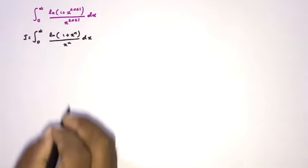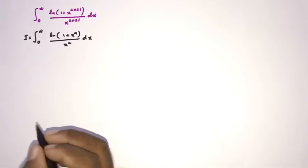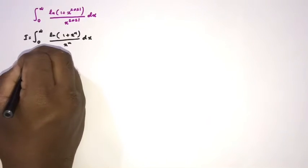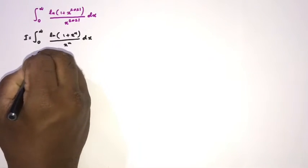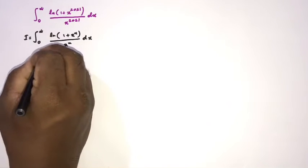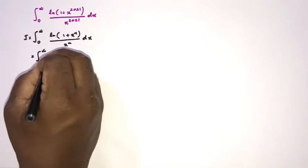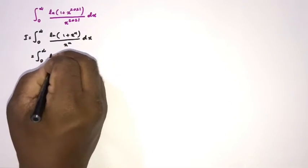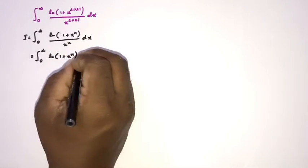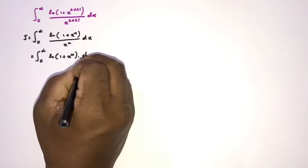We can call our integral I. Now I am going to use IBP — integration by parts. So the integral from zero to infinity: as the first function I am going to take the natural log of (1 + x^n), then d/dx of the second function.